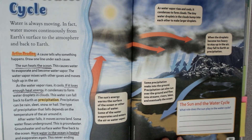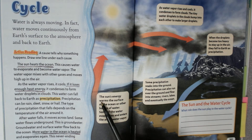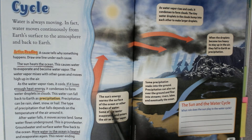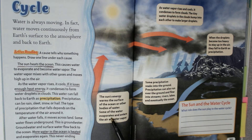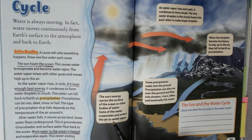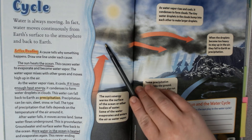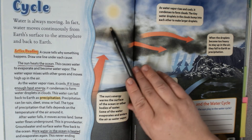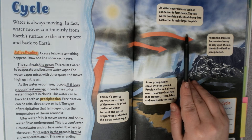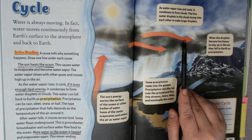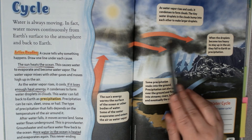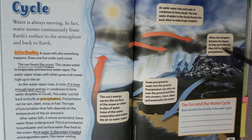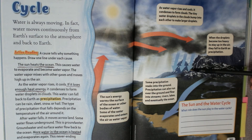So, let's take a look at this water cycle. Here it says: the sun's energy warms the surface of the ocean or other bodies of water, and some of the water evaporates and enters the air as water vapor. It's getting heated and it evaporates into the air. Then, as the water rises, it cools. And it condenses to form clouds. These tiny water droplets in the clouds bump into each other, making large droplets. As the droplets become too heavy to stay in the air, they fall to the ground as precipitation or rain.